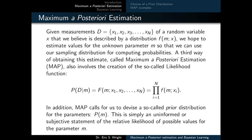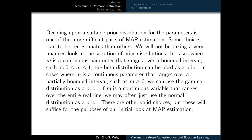MAP also involves the creation of the so-called likelihood function: p of d given m, equals f of m and x1, x2, all the way up to xn. In addition, MAP calls for us to devise a so-called prior distribution for the unknown parameters, p of m. This is simply an uninformed or subjective statement of the relative likelihood of possible values that the parameter m might take on. Deciding upon a suitable prior distribution is one of the more difficult parts of MAP estimation, and some choices lead to better estimates than others.